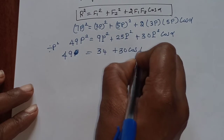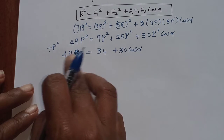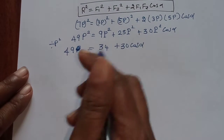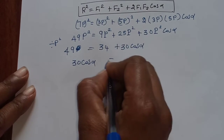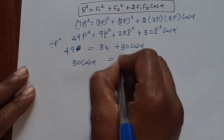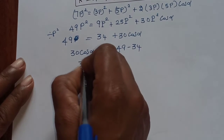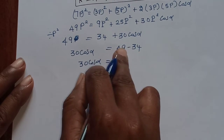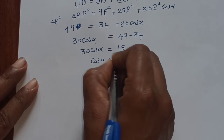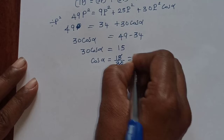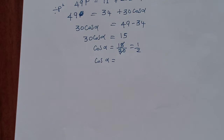30 cos(alpha) plus 34 on the left; moving 34 to the right: 30 cos(alpha) equals 49 minus 34, which is 15. Therefore cos(alpha) equals 15 divided by 30, which simplifies to 1/2.